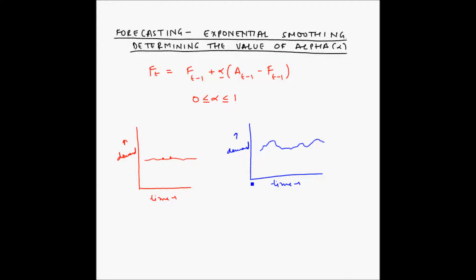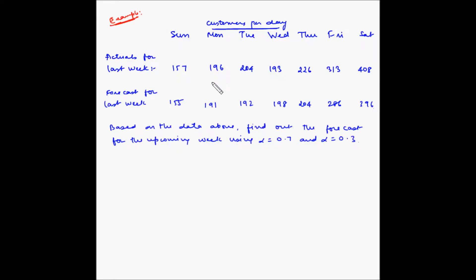Now let us look at an example where we will try to find the forecast for period t using different values of alpha. In this example, we have been given data for a restaurant — specifically, the number of customers visiting per day. The restaurant is open seven days a week. We have been given the actuals for the last week and what was forecasted for that week. Based on this data, we are asked to find the forecast for the upcoming week using alpha equals 0.7 and alpha equals 0.3.